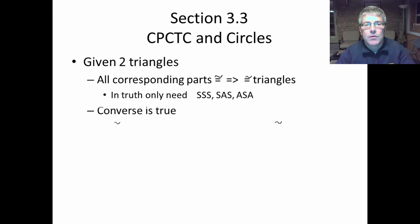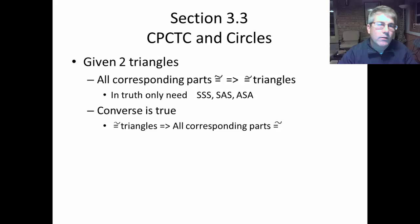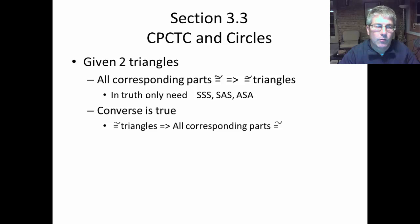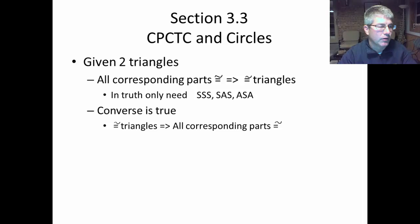However, the converse of this is true. It turns out that once we have congruent triangles, it would logically follow that all the corresponding parts of those triangles would be congruent. So we don't need to prove the remaining corresponding parts — we know that once the triangles are congruent, then all the corresponding parts are congruent.